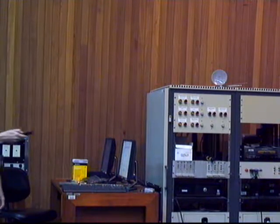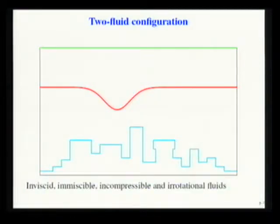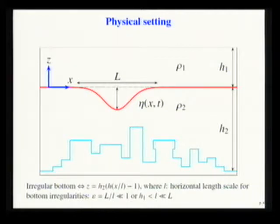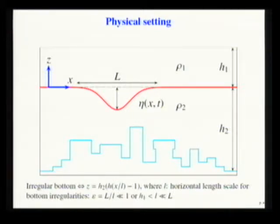We want to study the interaction of internal waves with topography — with arbitrary topography. We set a two-fluid configuration consisting of two inviscid, incompressible, and irrotational fluids of different densities. For stable stratification, we assume the density of the upper fluid is smaller than the lower one. We assume the upper layer is shallow compared with the characteristic wavelength of the perturbed interface, and the lower layer is intermediate, so H2 is comparable with capital L.